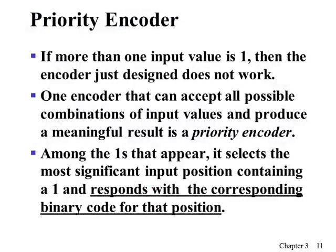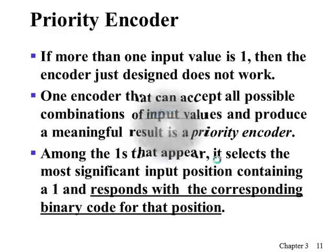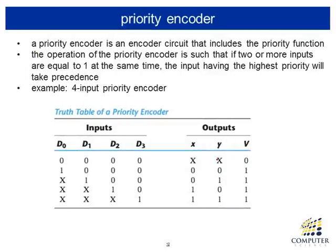The priority encoder addresses the case where, in the encoder we just discussed, if more than one input has value one, the encoder does not work correctly. So we have a slight variant of the encoder which accepts more than one input being one. In this priority encoder, if more than one input has a one value, the output produces the position of the input which is the most significant position.